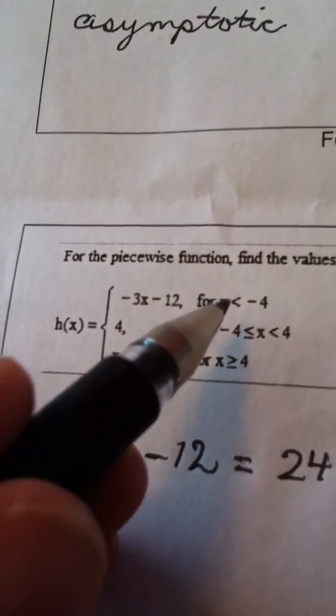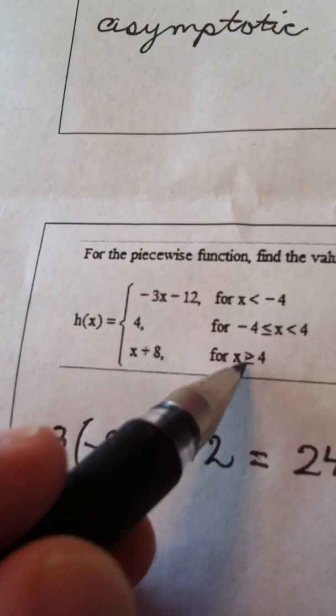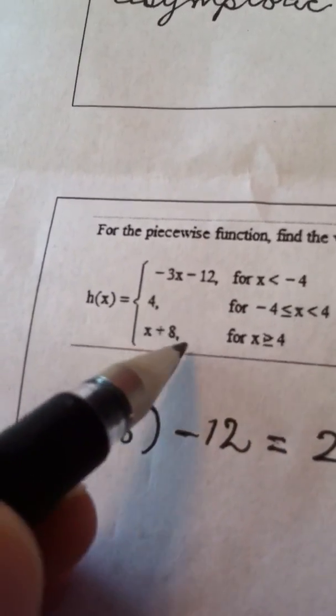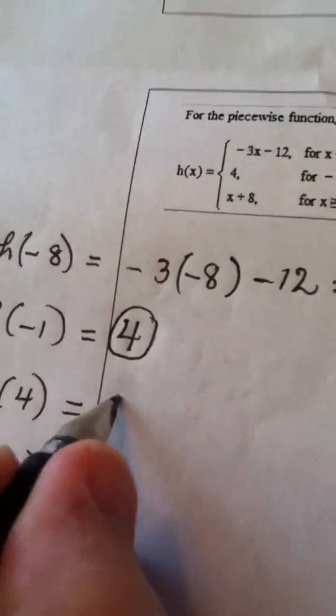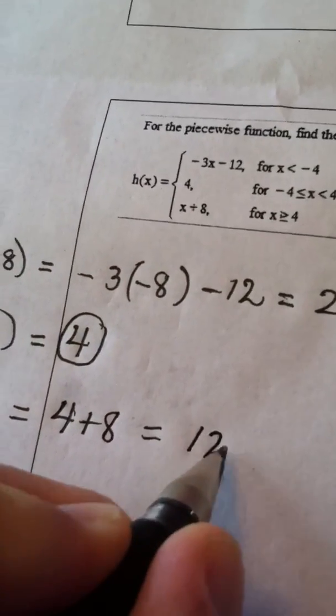How about h of 4? Well, when I look up here, 4 is in the bottom tier because 4 is greater than or equal to 4. So the rule that I use would be x plus 8. 4 plus 8 gives me the answer 12.